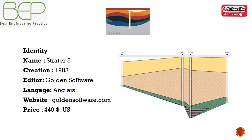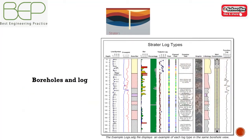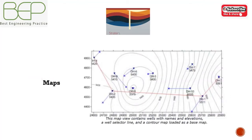Strata 5 was created in 1983 and edited by Gordon Software. It is available in English language only. It is an American software, and the price varies around $4,349 US dollars. Strata 5 offers flexibility in the design of logs and is very useful for the representation of in-situ tests. It automatically creates borehole logs with corresponding colors for the lithology simply by connecting the boreholes at the touch of a button. Strata 5 can also design the map of a given area, locating the sounding points and basic parameters.